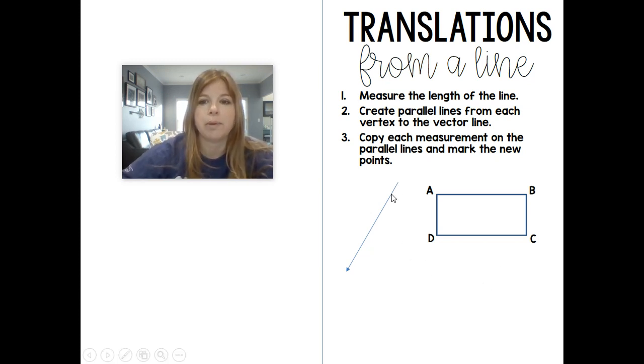So here's what we would do. Step one, we would measure the length of this line. Then we would create parallel lines from each vertex to the vector line. So for example, that blue line, the direction I want my figure to be translated in, would be translated along this parallel line of the same length.